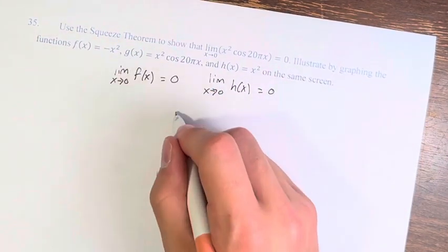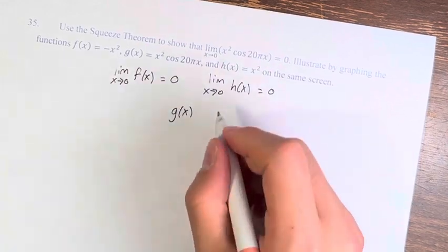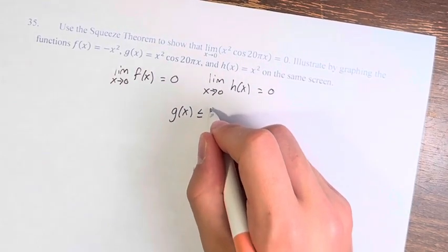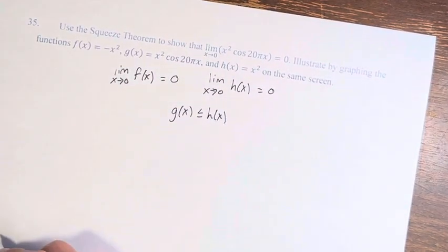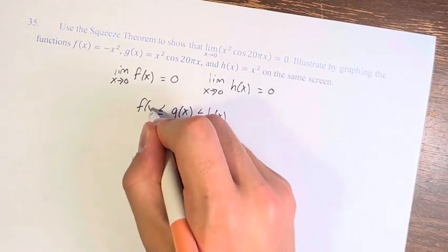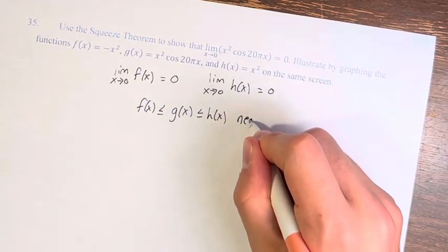And we just showed that our function g(x) is less than or equal to h(x) and greater than or equal to f(x) near x equals 0.